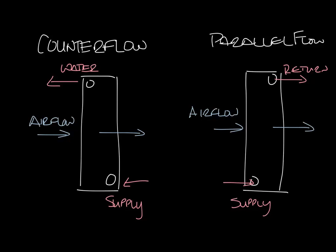In a parallel flow coil, the cold supply air will see the warmest water temperatures first, and then as it moves through the coil, the water temperatures will go down.